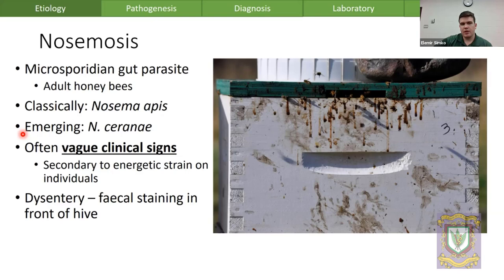For our European honeybee, we typically think of Nosema apis as the primary pathogen. However, in the last 30 years we've had a crossover event from the Asian honeybee — the reservoir host of Nosema ceranae — crossing over into European honeybee populations and causing some uncertainty and concern.